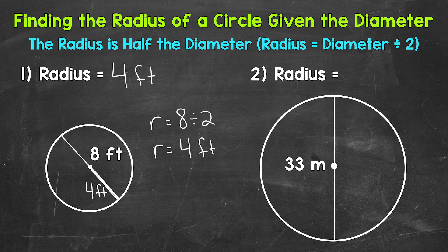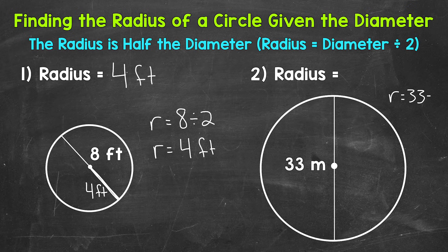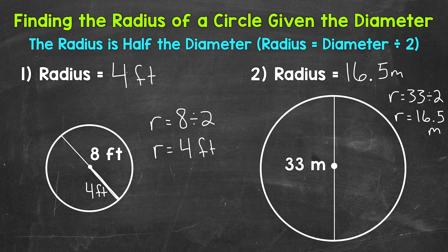Let's move on to number two where we have a given diameter of 33 meters. So our radius equals 33 divided by two. 33 divided by two is 16 and a half or 16 and five tenths meters. So let me rewrite that up top. So we have 16 and a half meters.